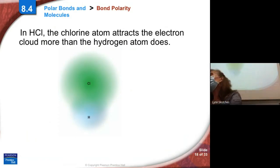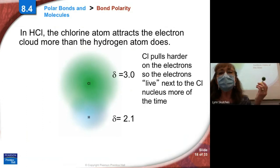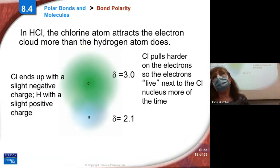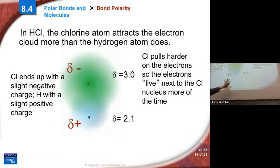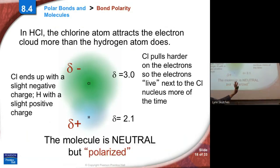So unequal sharing. Just a silly example. So unequal sharing happens in hydrogen chloride. Chlorine is a 3.0. Hydrogen is a 2.1. That's the difference of 0.9. What does that mean? That means one side of the molecule is a little bit positive. One side's a little bit negative. But the molecule as a whole, you've got to keep in mind, it's neutral.